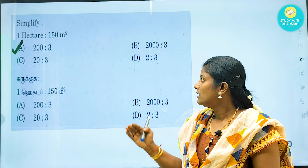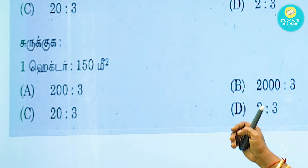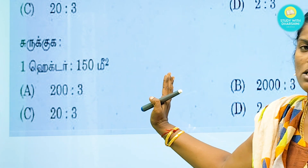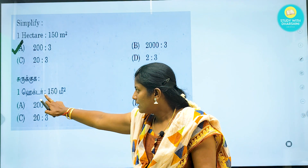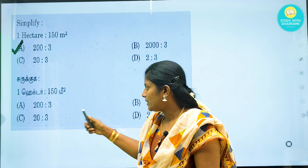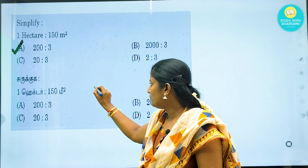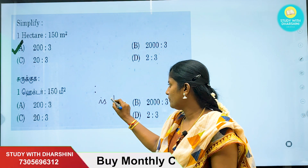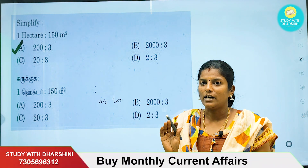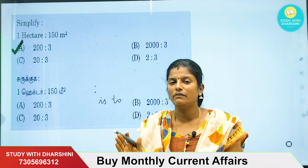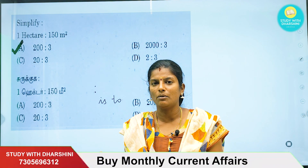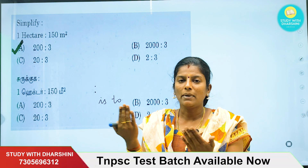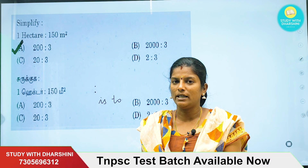First question. One hectare equals 150 meters square. We will compare the two quantities — hectare and meter square.